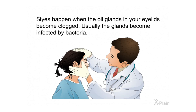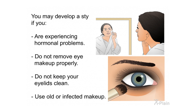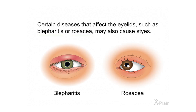Styes happen when the oil glands in your eyelids become clogged — usually the glands become infected by bacteria. You may develop a stye if you are experiencing hormonal problems, do not remove eye makeup properly, do not keep your eyelids clean, or use old or infected makeup. Certain diseases that affect the eyelids, such as blepharitis or rosacea, may also cause styes.